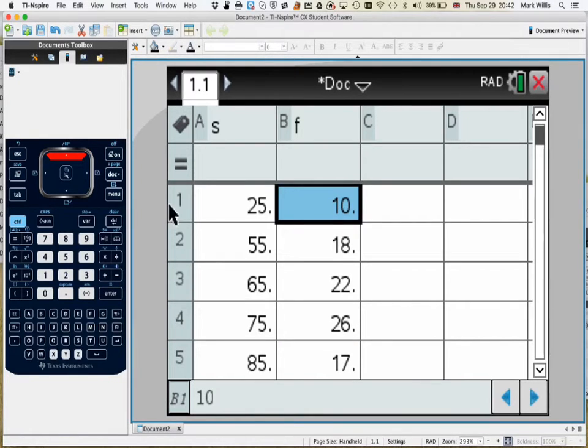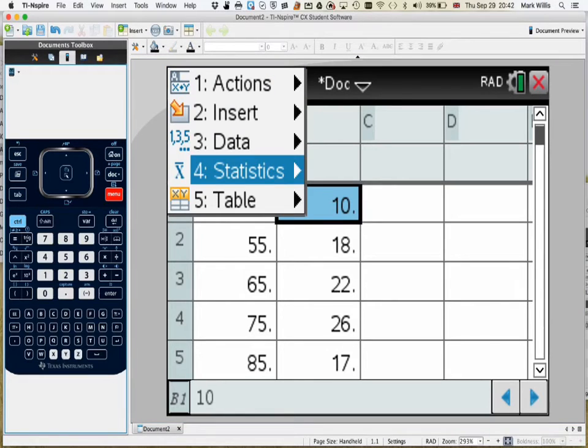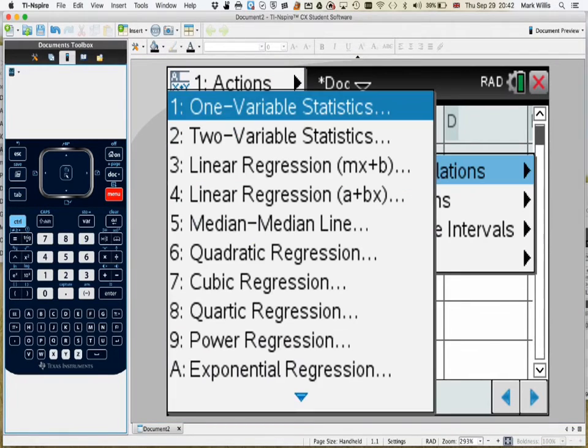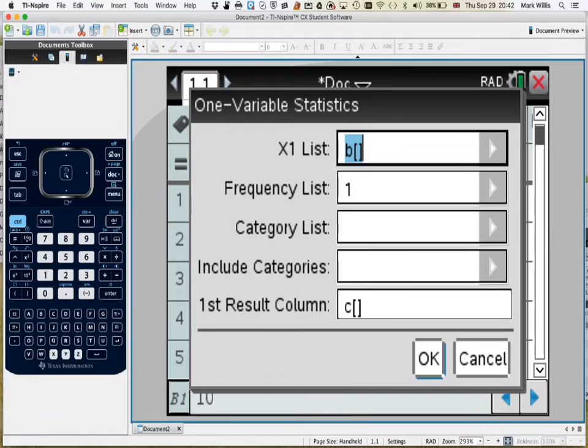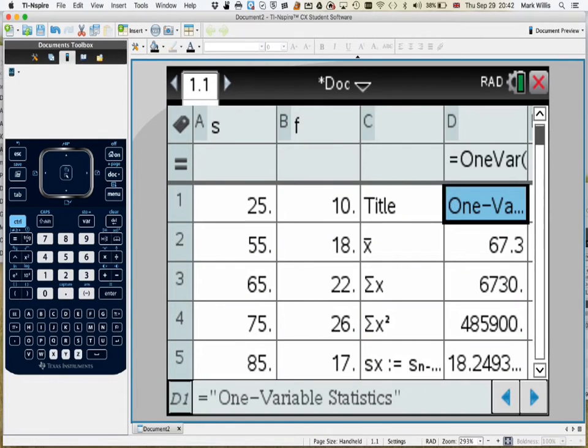And then to get the data that we want, menu, number four, statistics, number one, stat calculations, number one, variable statistics, number list one, press OK, and then put the X list as S, as the speed, and the frequency as F. And it will put the results in the first available column, which is C. That's OK. And press OK. And we get the results that we want.